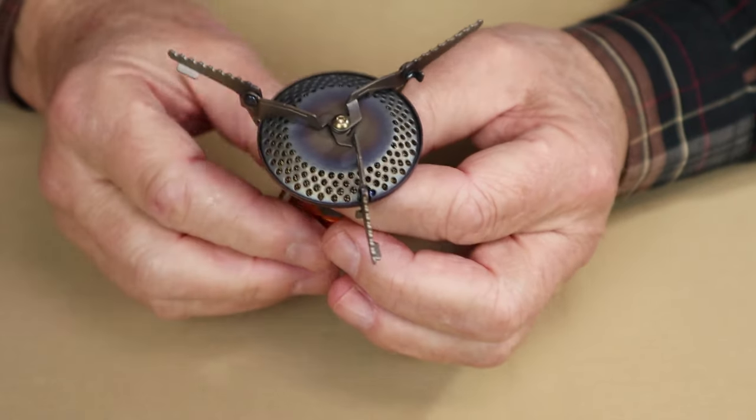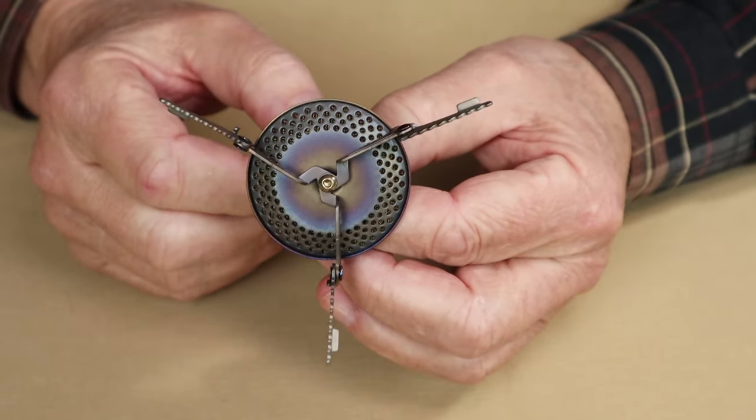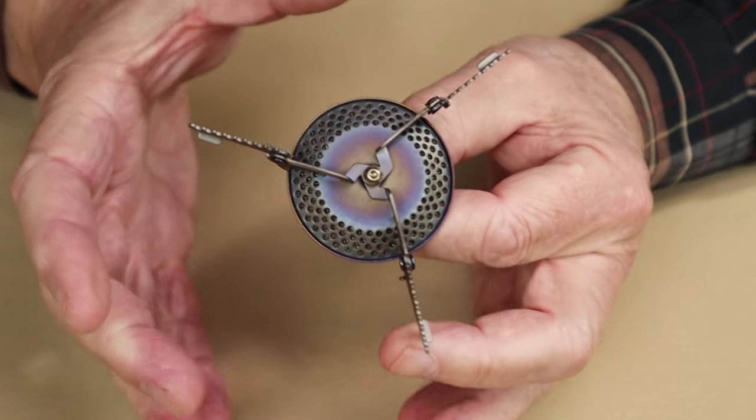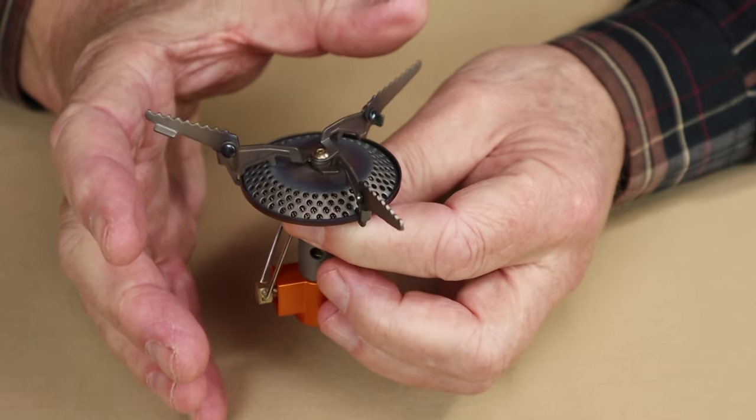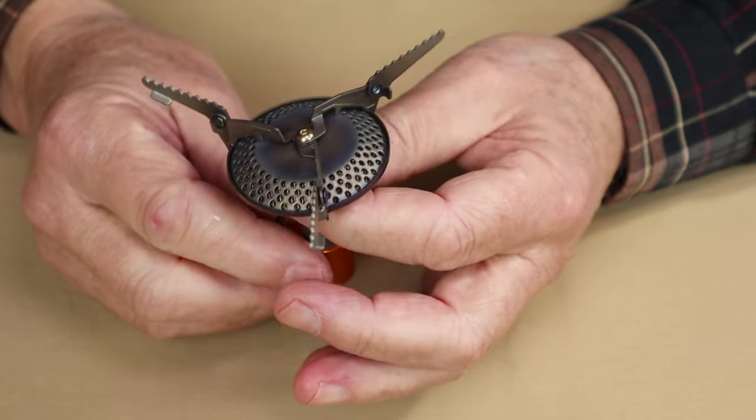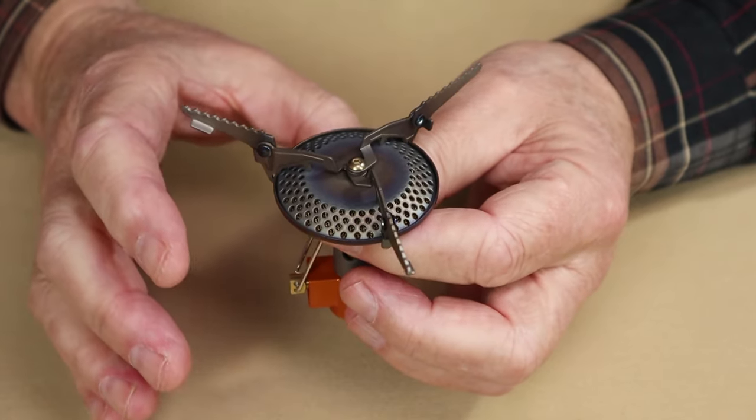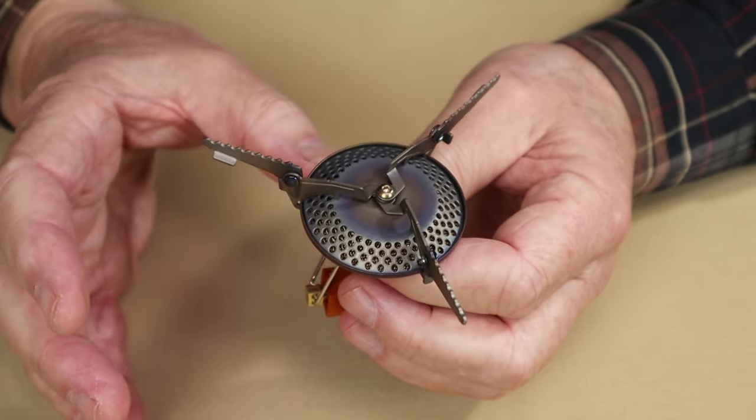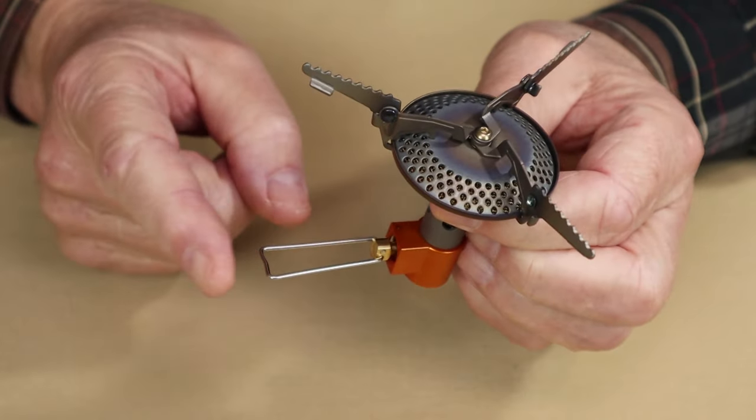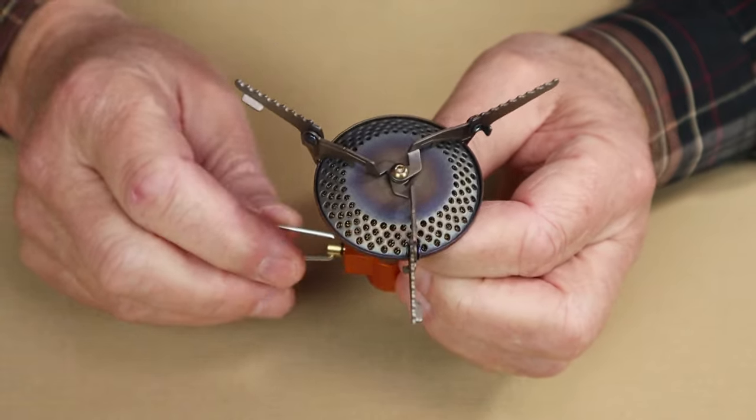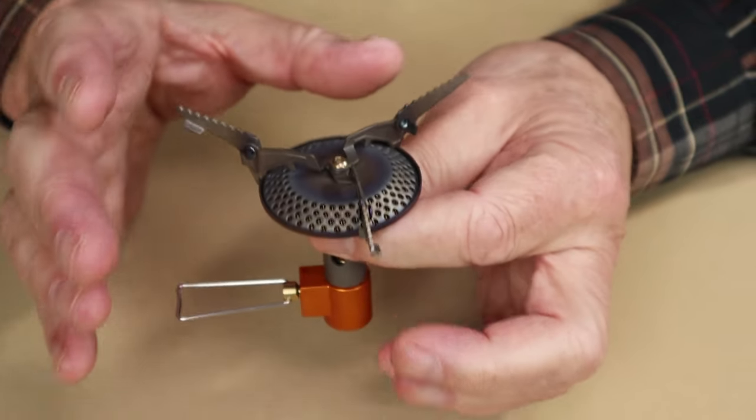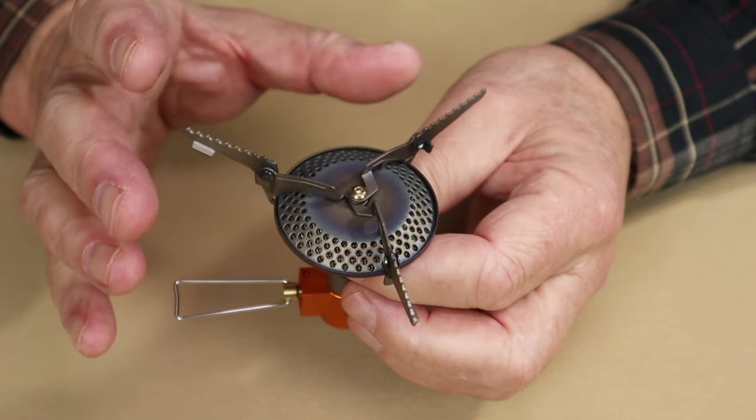Look at the burner itself, look how wide it is, how many jets there are, and the dispersion of the flame is so much greater with this that the heat is distributed across the bottom of any pot or pan, lessening the chances of you burning or scorching anything inside of it. It also has great flame control here, and you can just get a better simmer between the two of them.